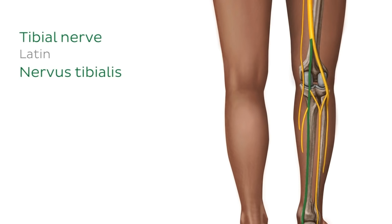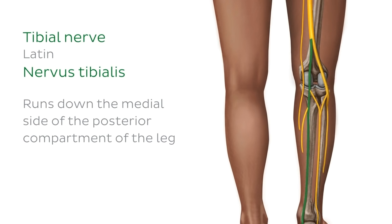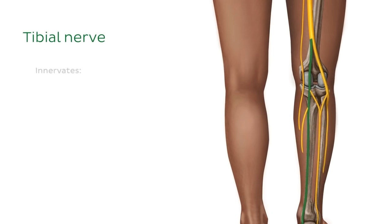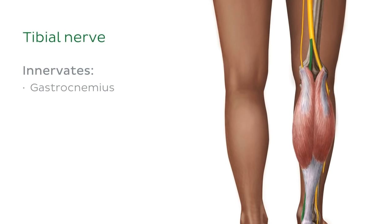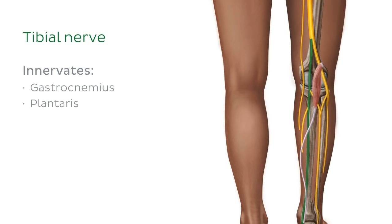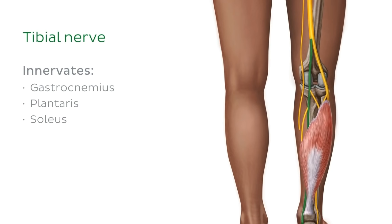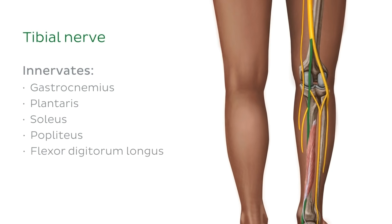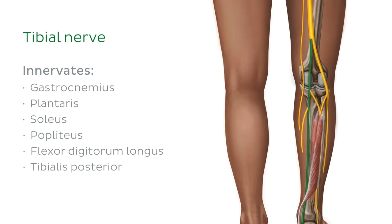Here we can see the tibial nerve, which runs down the medial side of the posterior compartment of the leg. The tibial nerve innervates all muscles in the posterior compartment of the leg, which are the gastrocnemius muscle, as well as the plantaris, the soleus, the popliteus, the flexor digitorum longus, the tibialis posterior, and the flexor hallucis longus muscle.